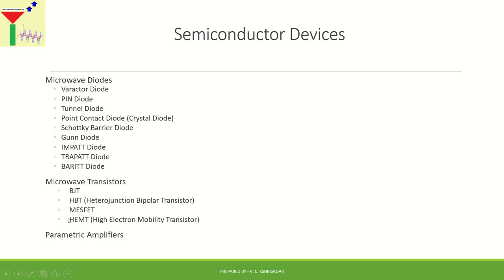Today we start by studying the remaining type of field effect transistor, which is similar to HBT but is a field effect transistor. The name of this transistor is the High Electron Mobility Transistor. Let us start discussing the High Electron Mobility Transistor, which is similar in operation to the heterojunction bipolar transistor but is essentially a field effect transistor device.